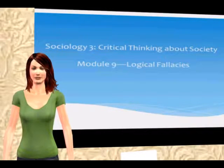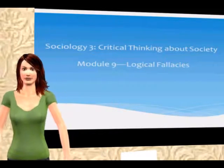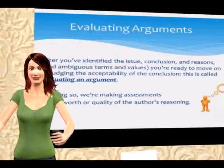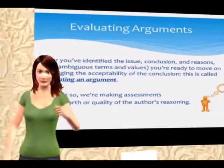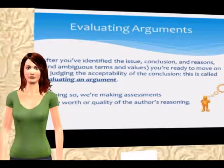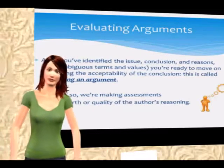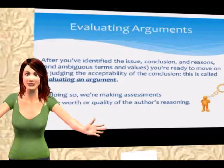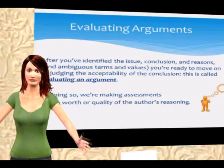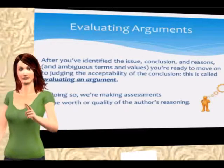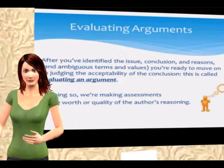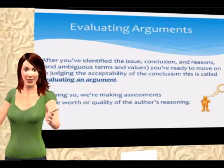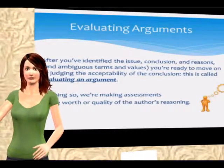Hello and welcome to Sociology 3 Module 9 video lecture on logical fallacies, one of my favorite topics when it comes to critical thinking. We're transitioning into a part of the course where we'll start to evaluate the arguments we come across. Recall that for the last few weeks we've been working on identifying the basic components of an argument: issues, conclusions, reasons, unstated assumptions — all those basic parts of an argument. Now we're going to start talking about how we evaluate the quality of these arguments.